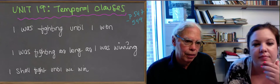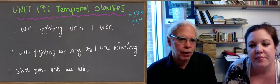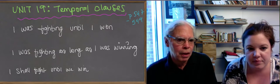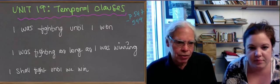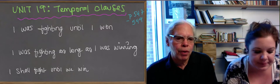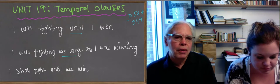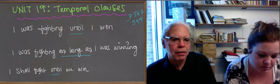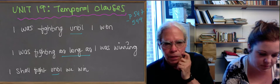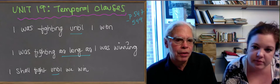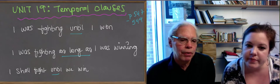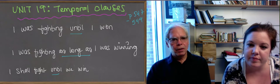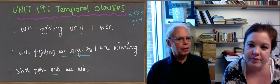So these are about a certain kind of clauses that the book calls temporal clauses. They're until clauses, as long as clauses, and before clauses. So if you say in English, I was fighting until I won, here's the question about something like that from a Greek point of view. If you're going to say until I won, is that going to be indicative or a mood?